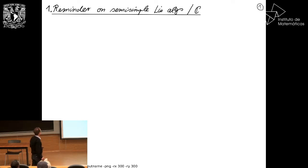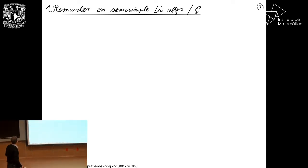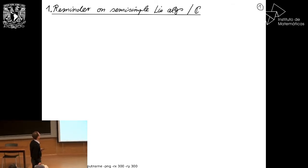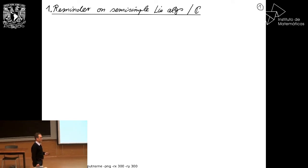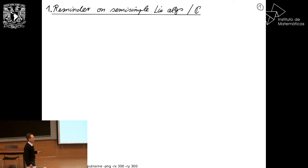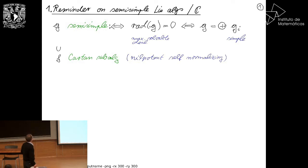Let's start with a reminder on semi-simple Lie algebras over the complex numbers — something fairly basic but enough to understand what we want to do. Most things will work the same way for Kac-Moody Lie algebras, but it's more messy to explain. A Lie algebra — you can think about it as N times N matrices with the usual commutator as a bracket. Such a Lie algebra is called semi-simple if its radical is zero.